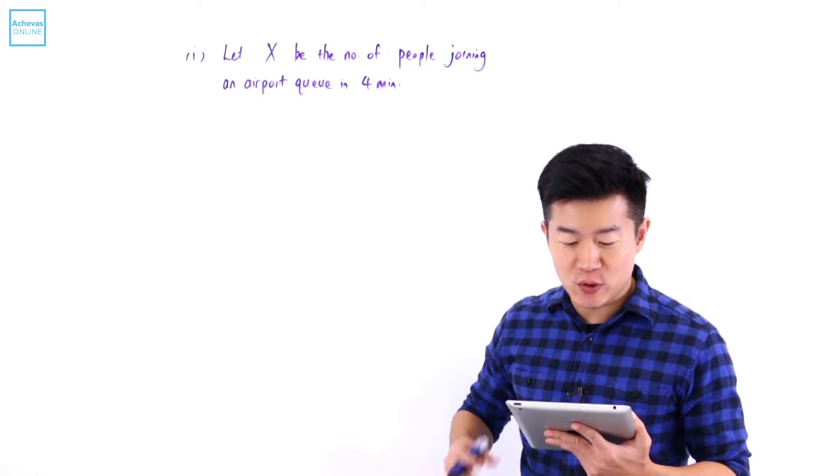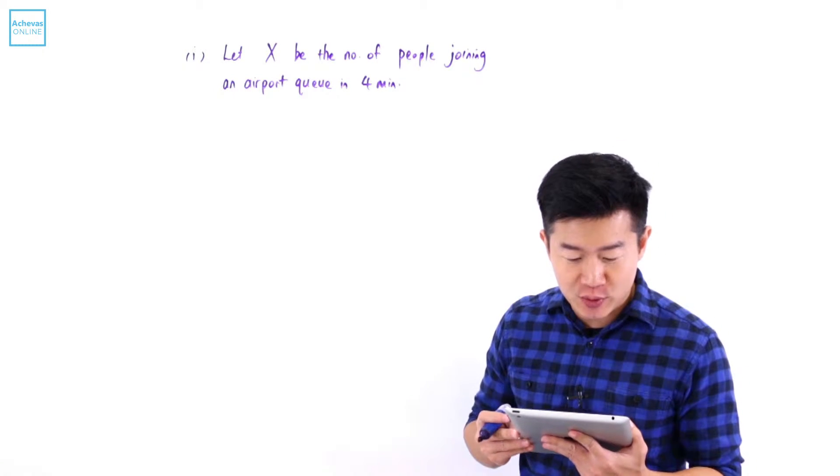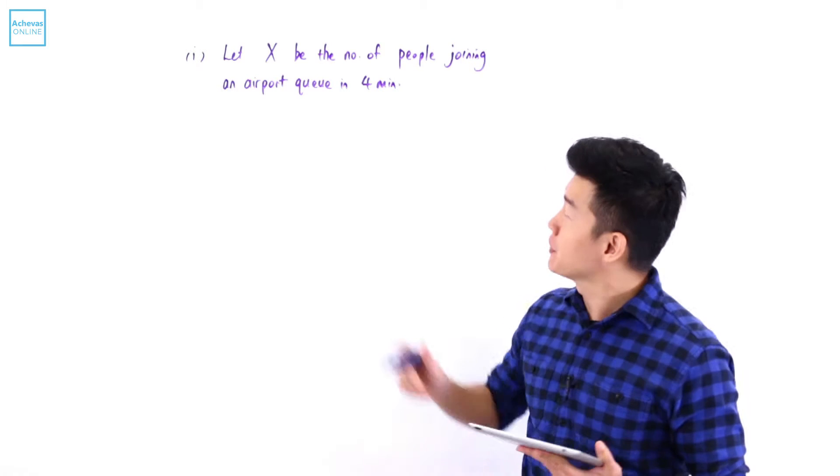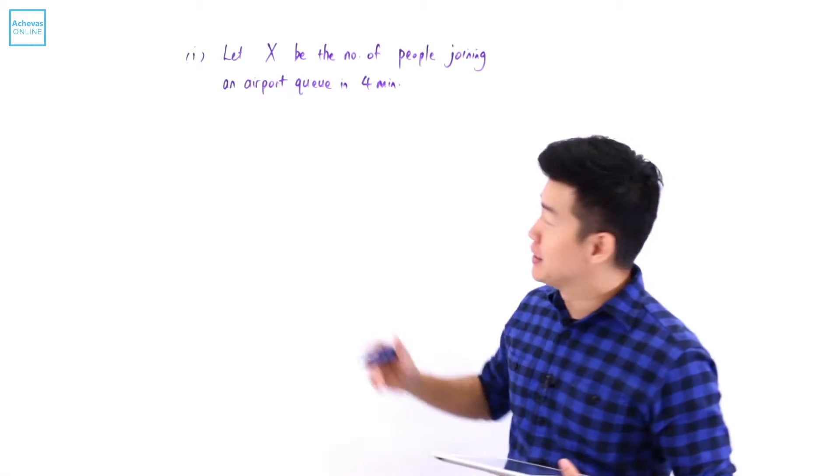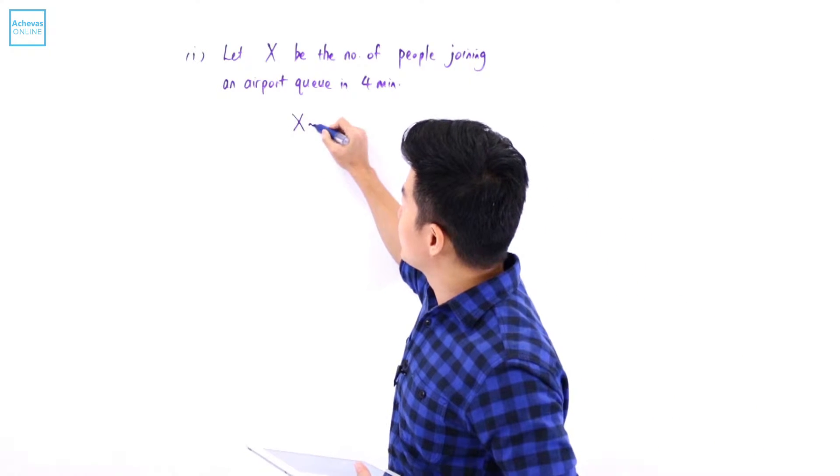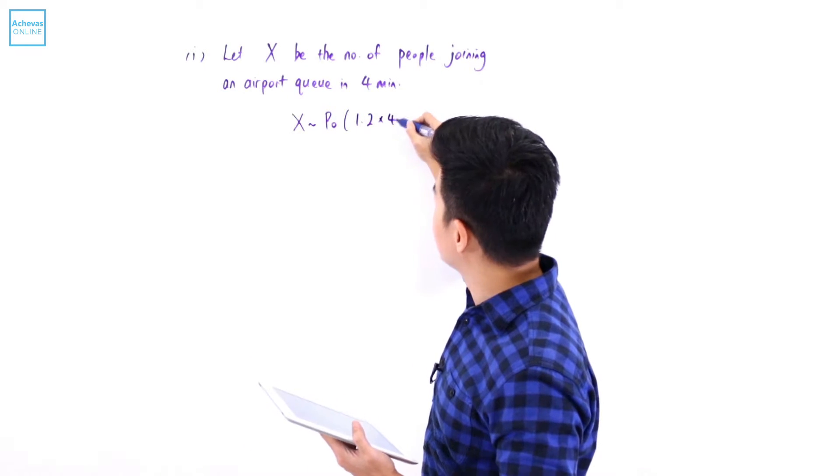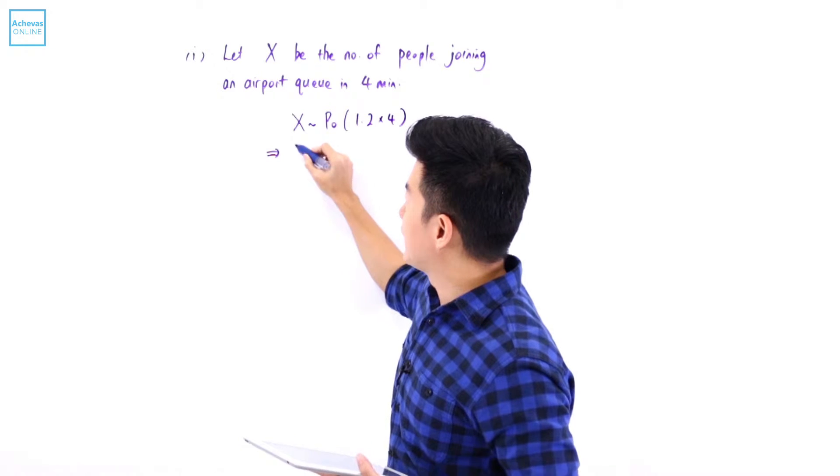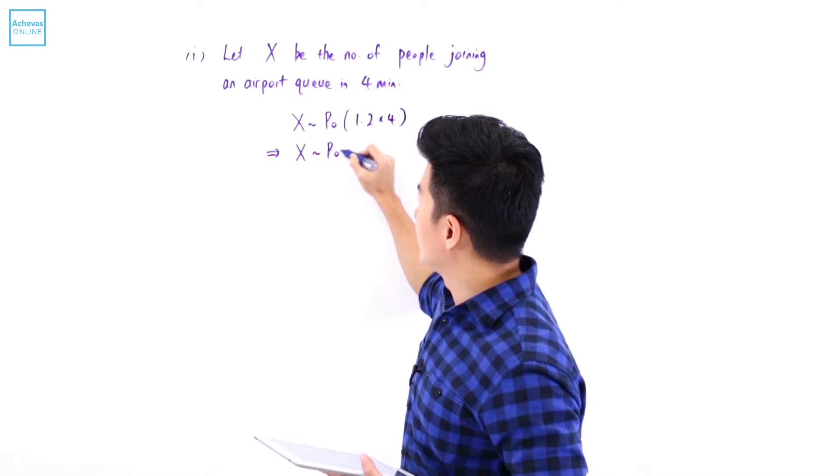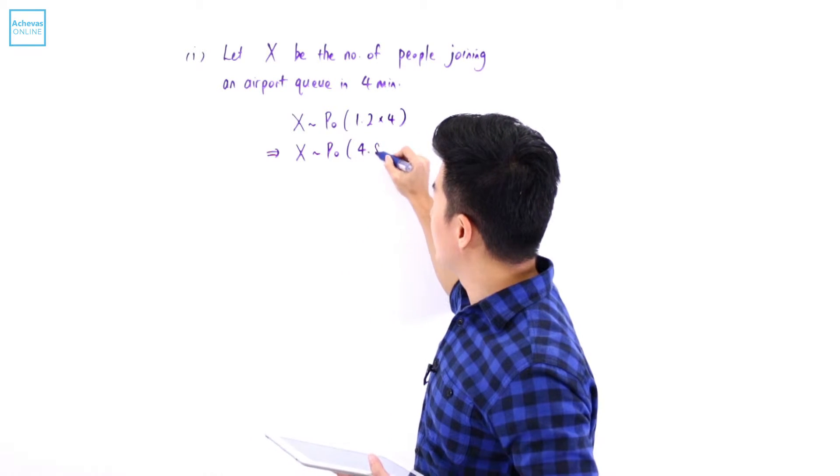The number of people joining the queue in 1 minute follows a Poisson distribution with a mean of 1.2. So now if we are looking at 4 minutes, that means X is going to follow a Poisson distribution of 1.2 multiplied by 4. We are going to look at X that is going to follow a Poisson distribution of 4.8.